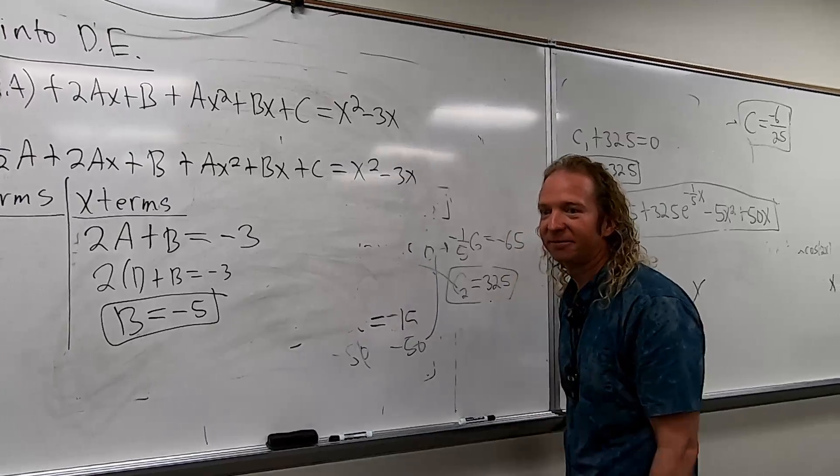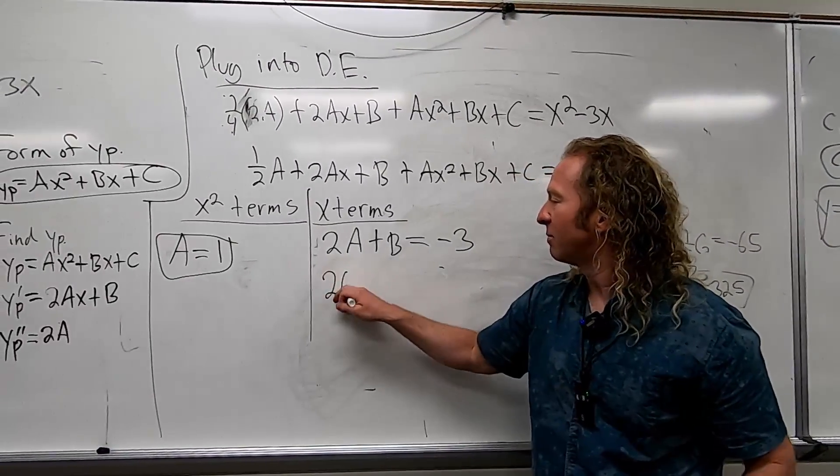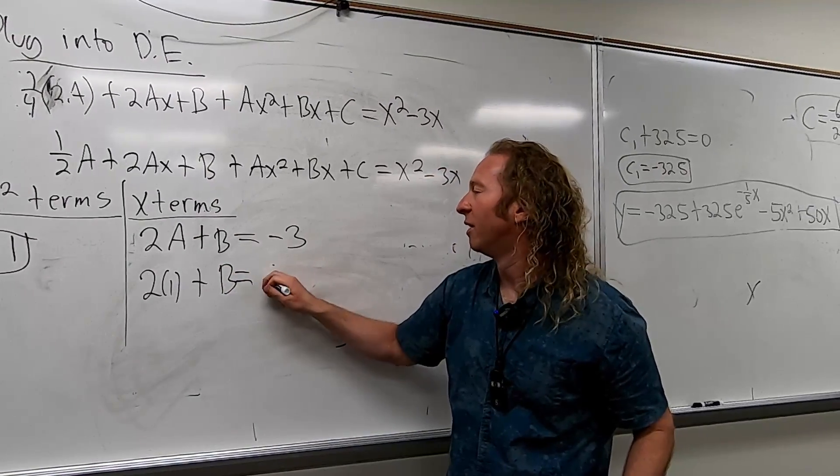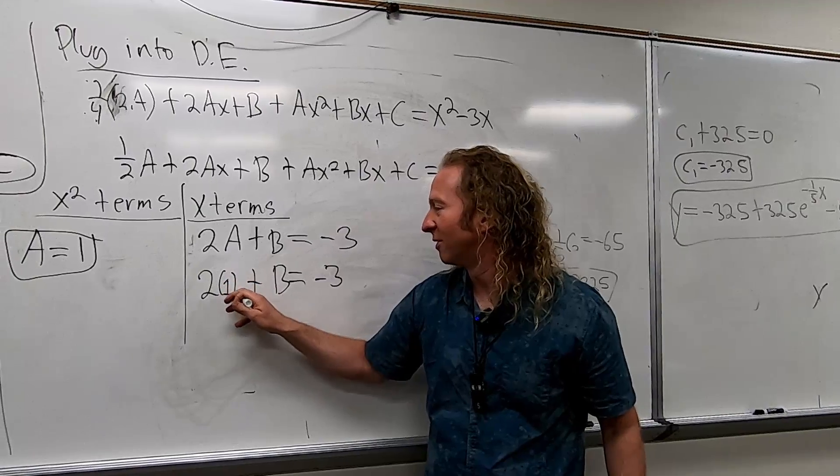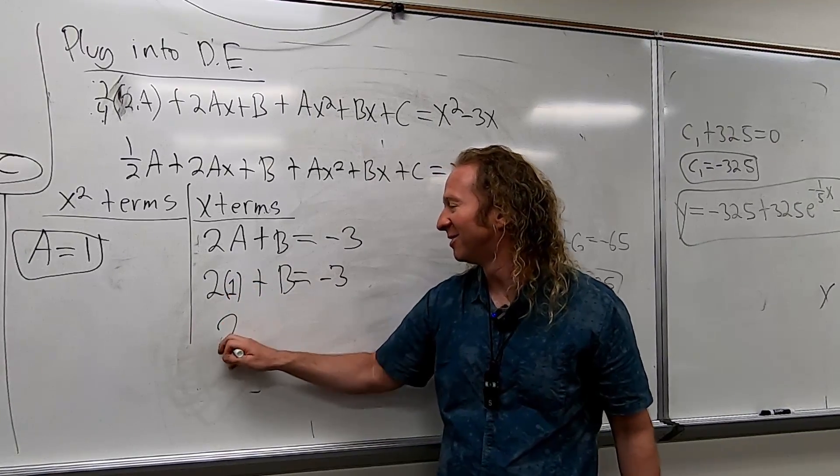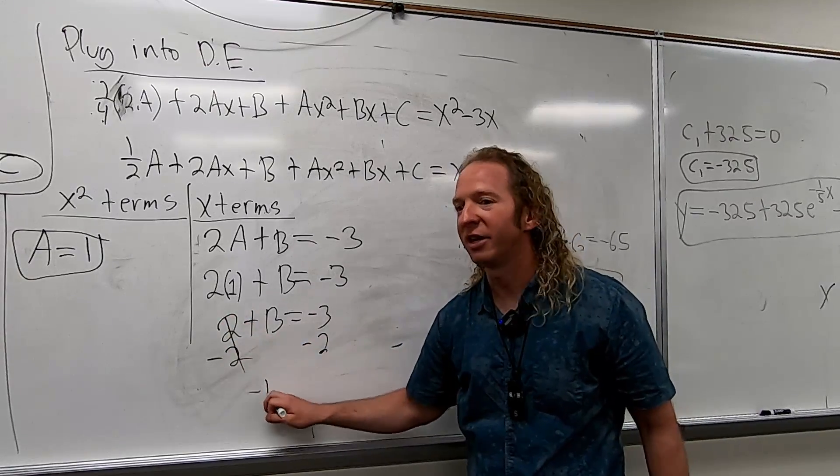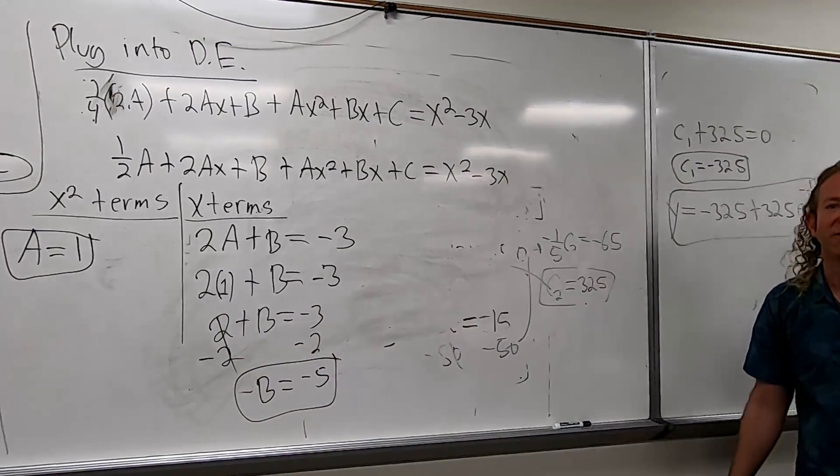Because it's two times one plus B. Yeah, it's a one. Yeah, because A is one. It's a one. Yeah, that's what I was going to say here. So, so then, yeah, so minus two, minus two, so it's negative five. B is negative five.